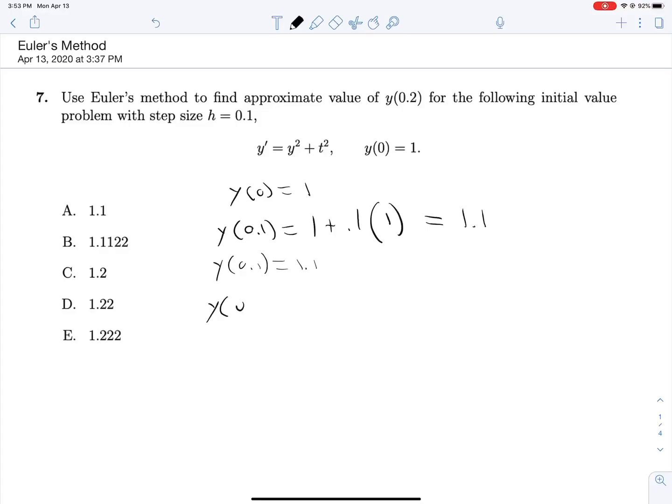and so we can approximate y at 0.2 as that value, 1.1, plus 0.1 times y prime evaluated at those conditions. So that's 1.1 squared, which is 1.2, plus 0.1 squared, which is 0.01.